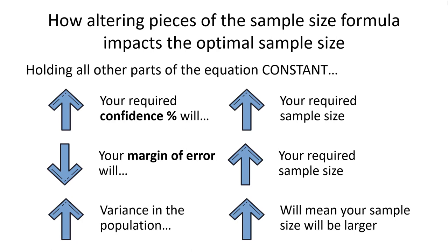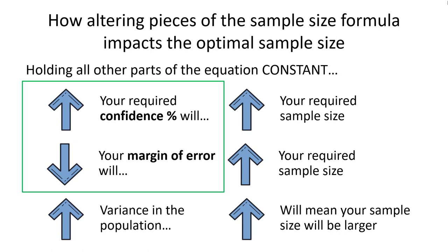Keep in mind, confidence percentage and margin of error are the only two levers in this equation that you get to control. Variance in the population is not something we get to tweak just because it makes us happier that we don't have to collect as much data. Our goal is always to estimate that value correctly, but the other two are up to us and must fit with the level of precision or resource constraints we face when conducting marketing research.